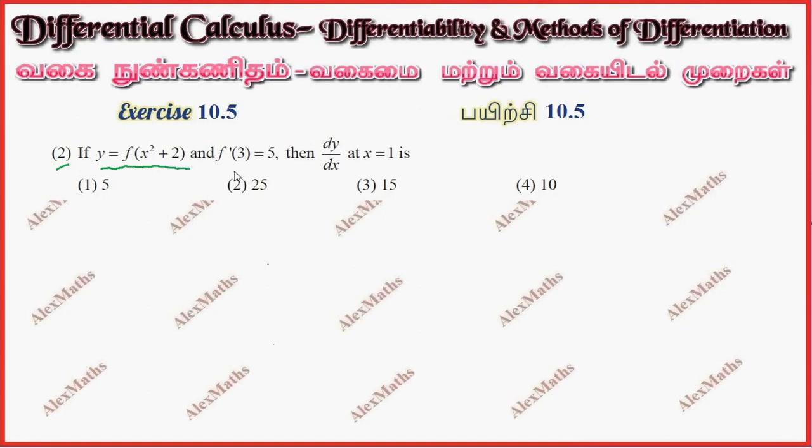If y equals f of x squared plus 2, and f dash of 3 equals 5, then find dy by dx at x equals 1.